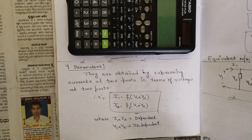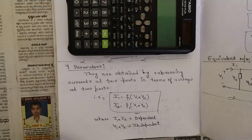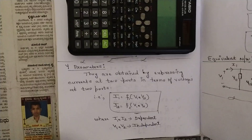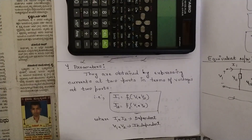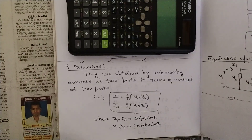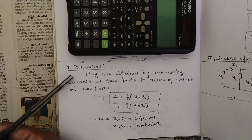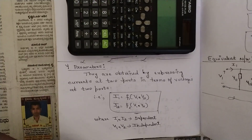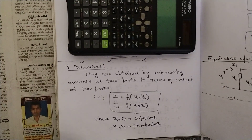Hello everyone, welcome to this new video. In the previous videos we started with Module 5, that is 2-port networks, and we discussed one kind of parameters — impedance parameters or Z parameters. We solved two problems related to that. Now if you know Z parameters very well, you can easily understand Y parameters, because this is just the reciprocal of Z parameters.